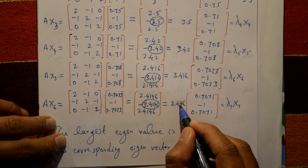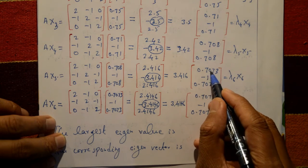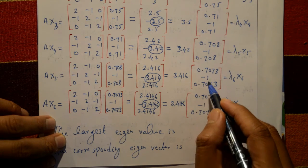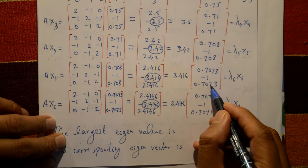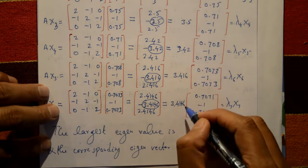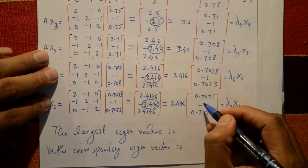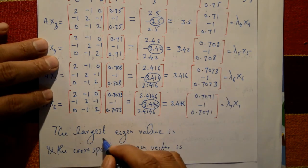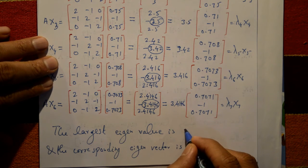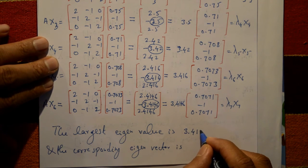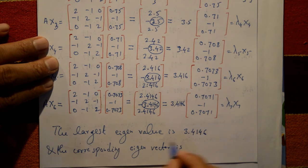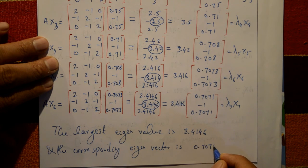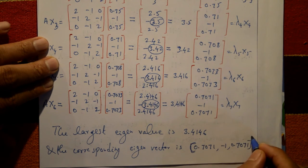Comparing the last two iterations: λ₆ = 3.416 and λ₇ = 3.4146 are approximately equal, and eigenvectors x6 = x7 = [0.707, -1, 0.707]ᵀ are the same. The iterations stop here. The largest eigenvalue is 3.4146 and the corresponding eigenvector is [0.7071, -1, 0.7071]ᵀ.